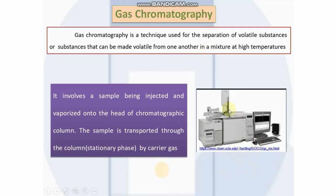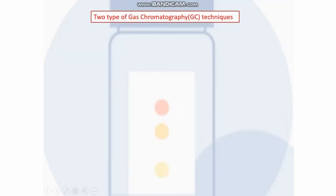This gas chromatographic unit involves a sample being injected and vaporized onto the head of the chromatographic column. The sample is then transported through the column — that is, the stationary phase — by a carrier gas.